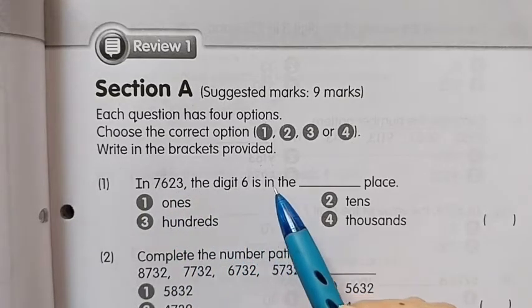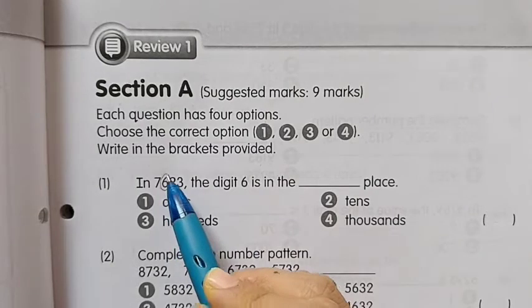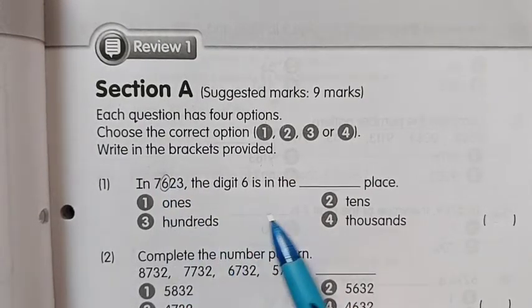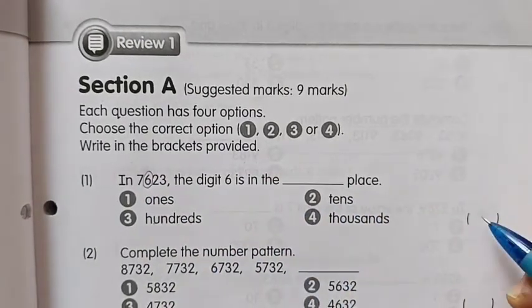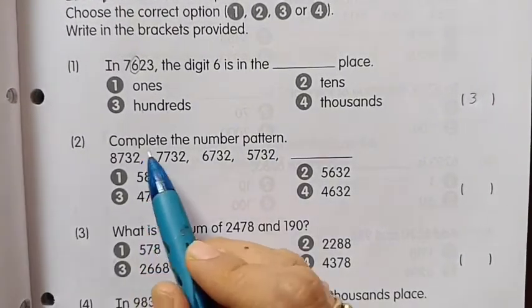Number 1: In 7623, the digit 6 is in the... Look at number 6, it is in the hundreds place. So the answer is 3.